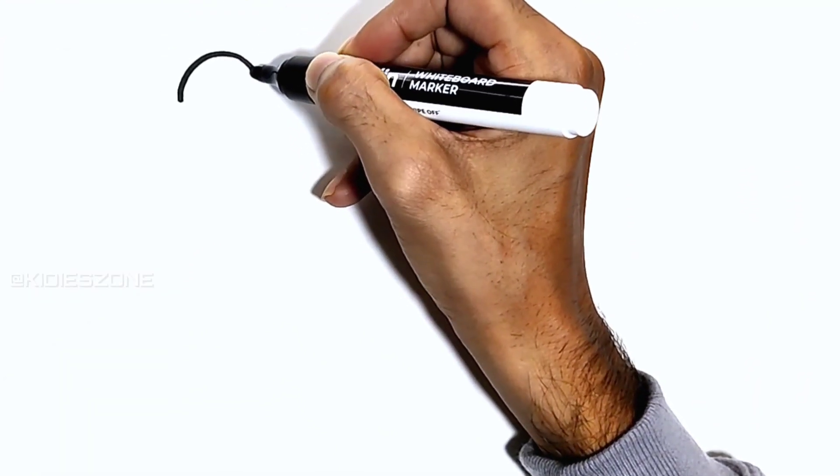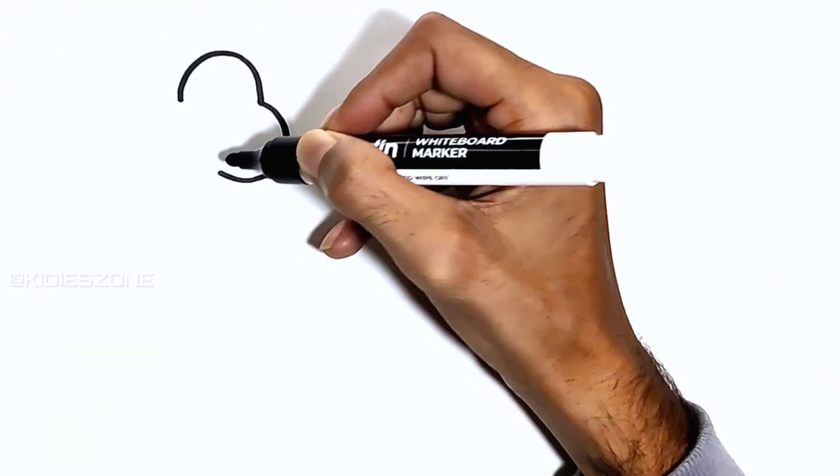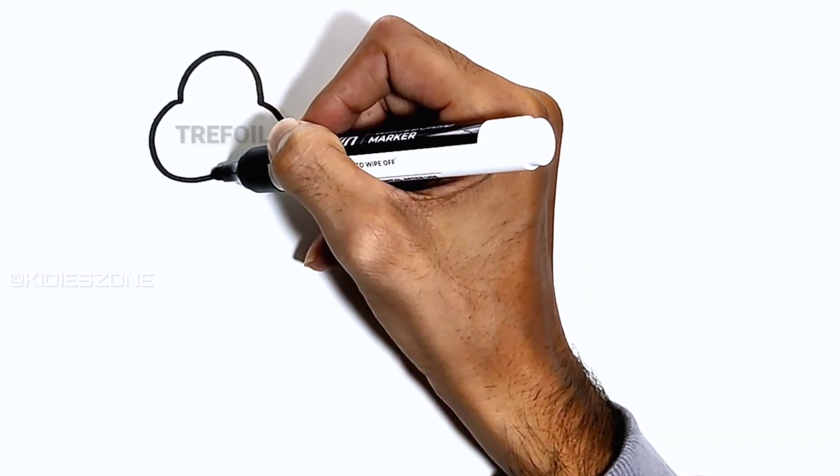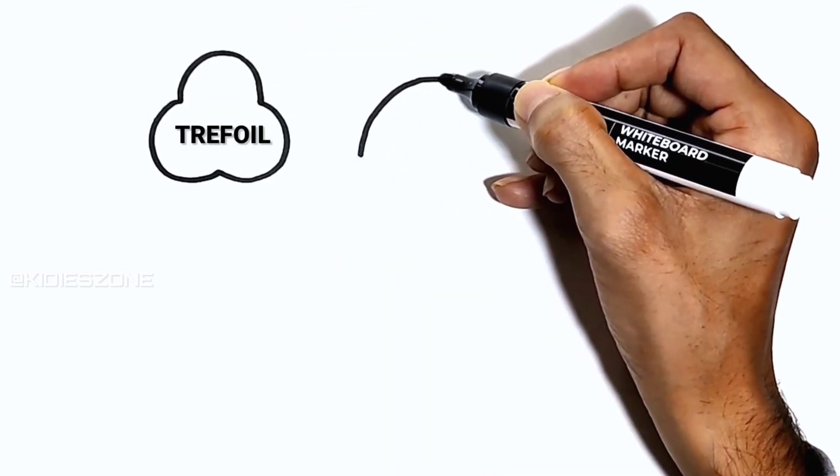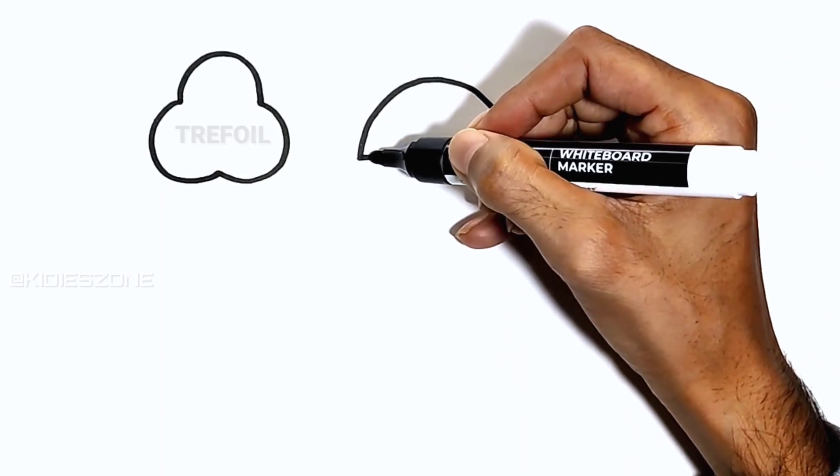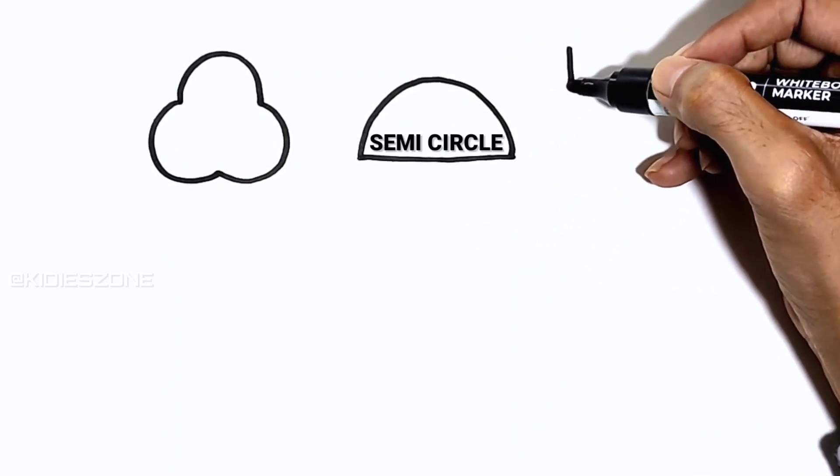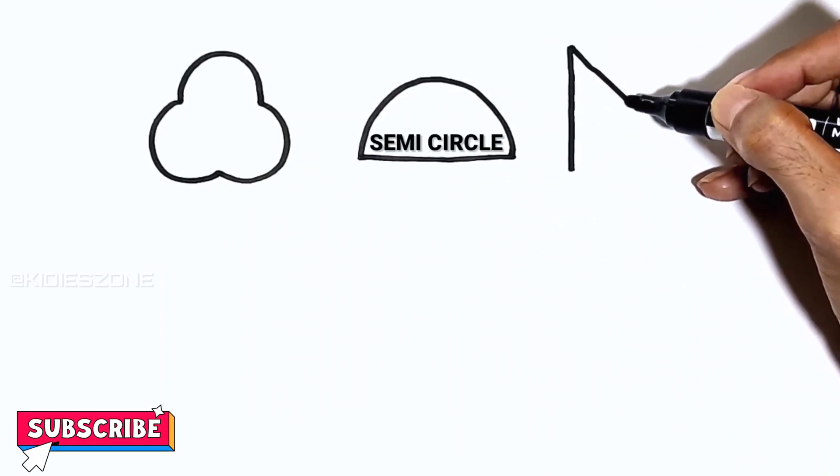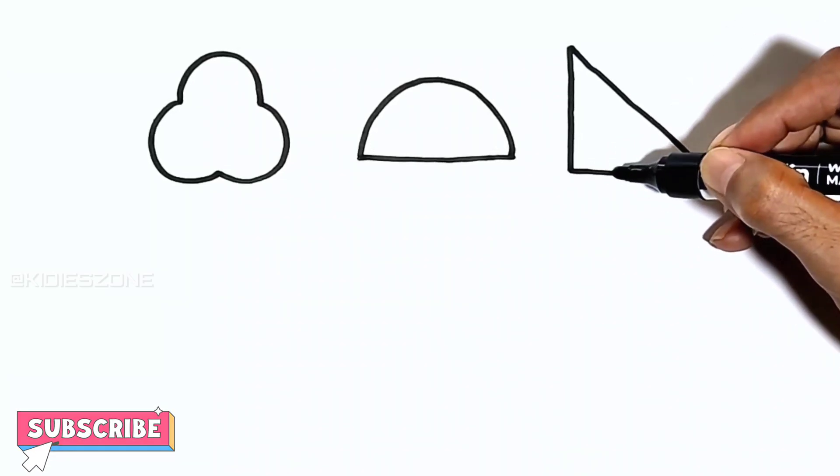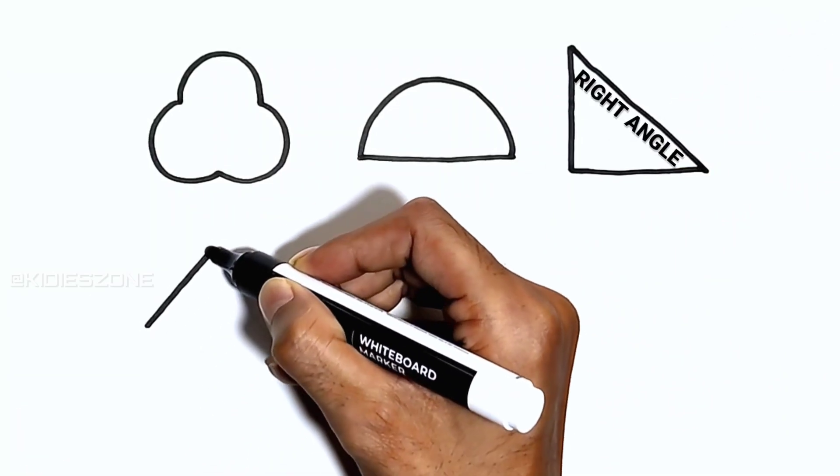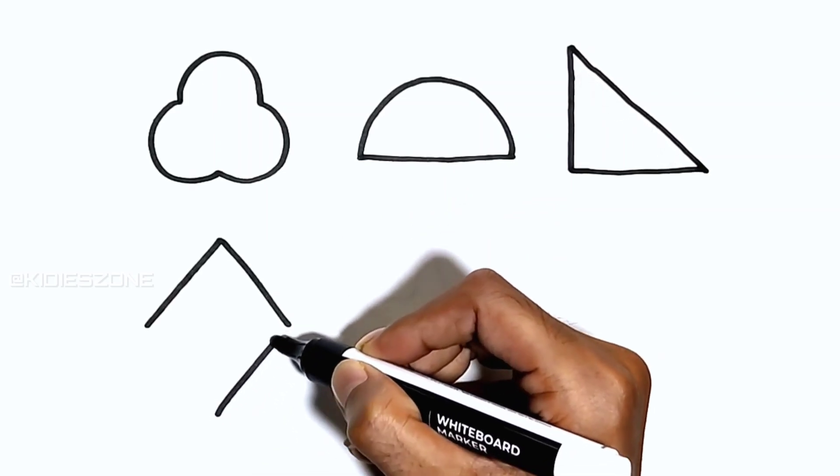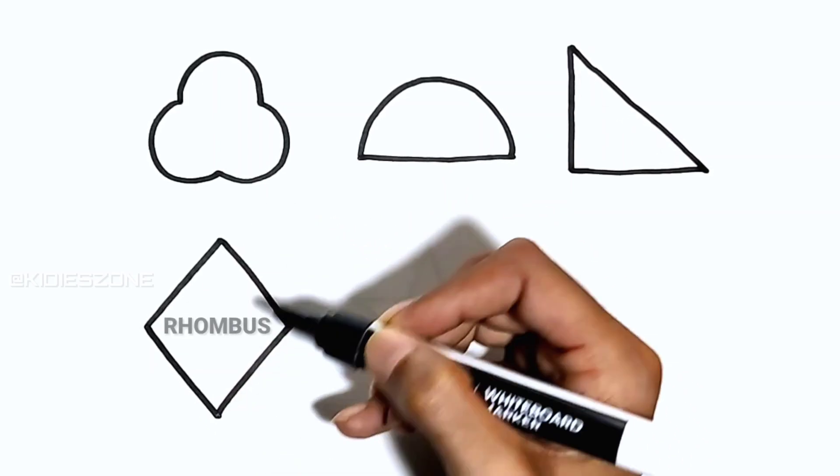Trefoil, semicircle. Q R S T U V W X Y and Z, now I know my ABC's. Rhombus.